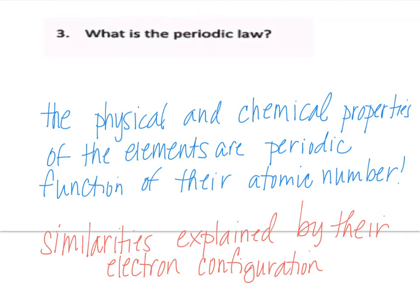And that leads us to the periodic law. The periodic law states that the physical and chemical properties of the elements are periodic functions of their atomic numbers. Their similarities can be explained by their electron configuration. Everything in the same group has the same outer configuration, it's just moving into energy levels, and that's why they behave similarly when they're in their groups.